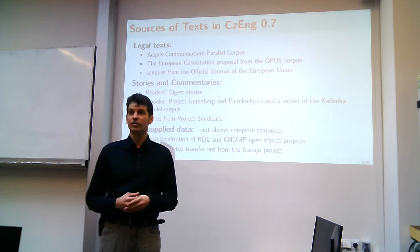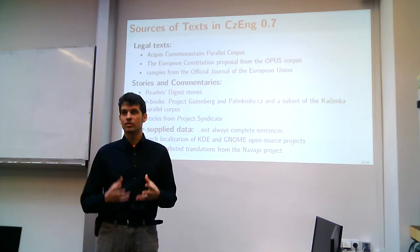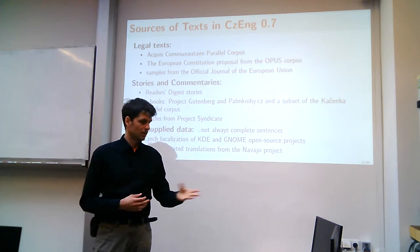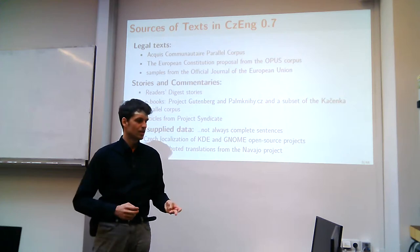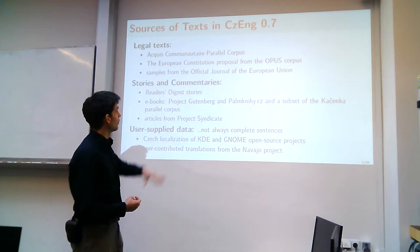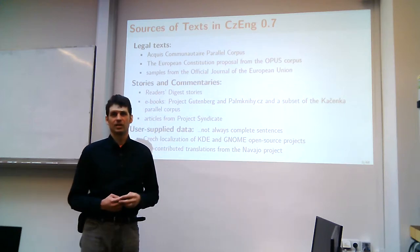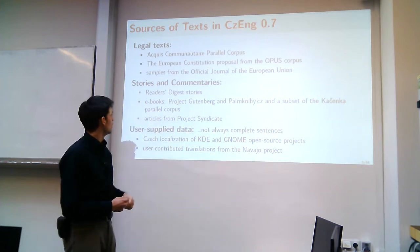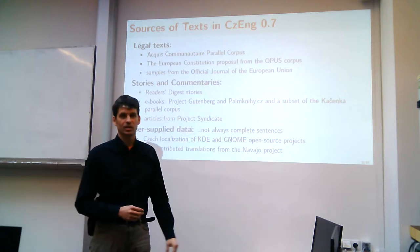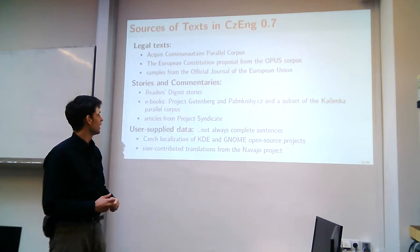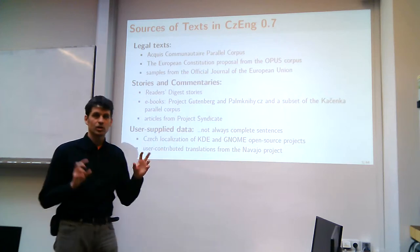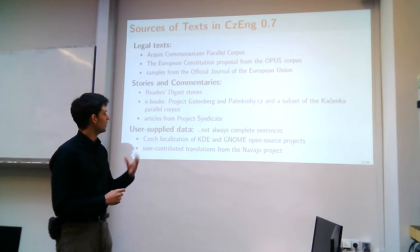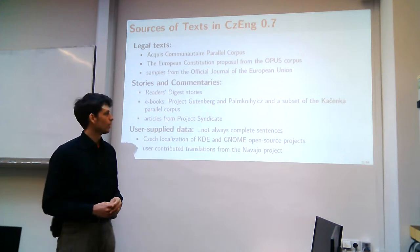In one of the very early releases of the corpus, CzEng 0.7, we were able to find and include these sources of texts: legal texts from the European Union — back then the Czech Republic had only been part of the EU for a couple of years, so it wasn't too large a collection — plus other documents. We were also able to get hold of stories and news commentaries: Reader's Digest stories, books from Project Gutenberg or Palmknihy, and the Project Syndicate, which is news commentaries. This project still exists — volunteers and journalists publish essays translated to high quality in many languages.